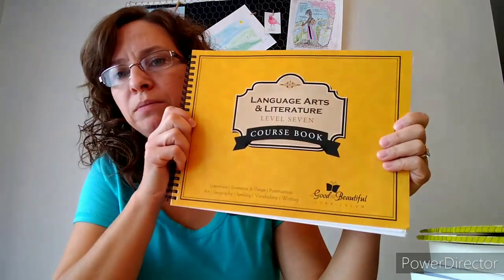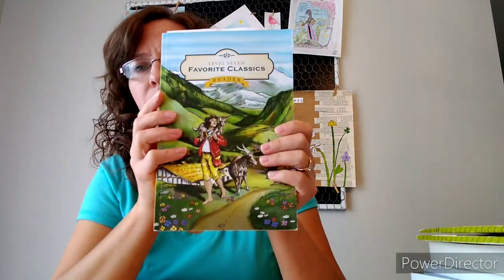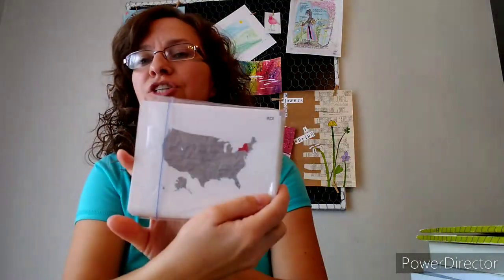For her language, she will be doing The Good and Beautiful level seven. This is the workbook, this is the course companion, and then she'll have the reader. She has these geography and grammar cards. I did a video on this as well a couple years ago, so if you're interested in seeing inside of this you can look at that video.